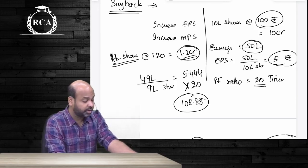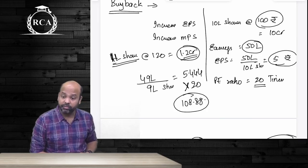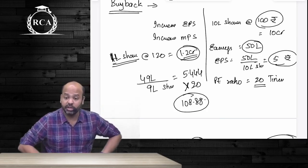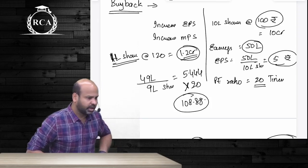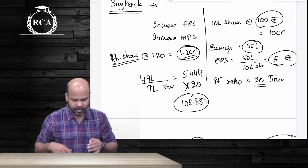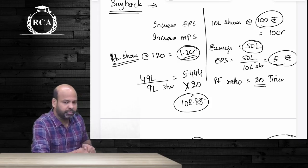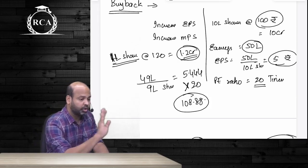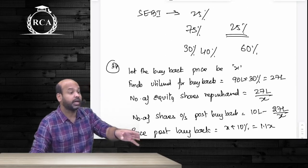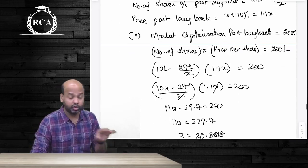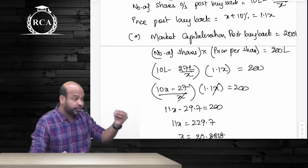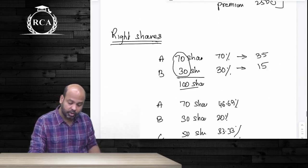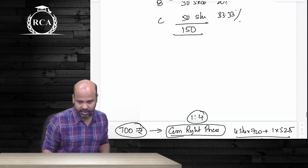After this we covered rights shares. Rights shares are shares offered to existing shareholders whenever a company raises money by way of equity issue. It is mandatory under the Companies Act to offer those shares to existing shareholders first. Rights shares are generally offered at a discount to the prevailing market price. Any transaction with your own shareholders will not result in an expenditure, so it is fine to issue shares at a discount to shareholders. If you give shares at a lesser price to outsiders it impacts shareholder wealth, but giving them to your own shareholders at a lesser price has no impact.